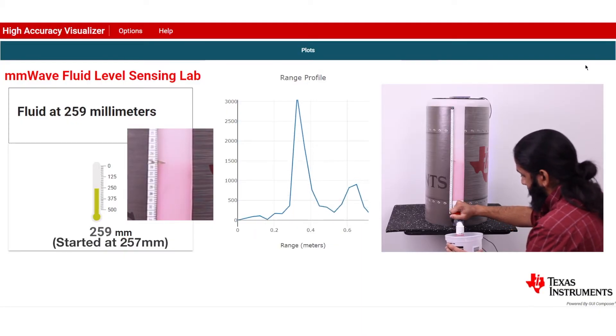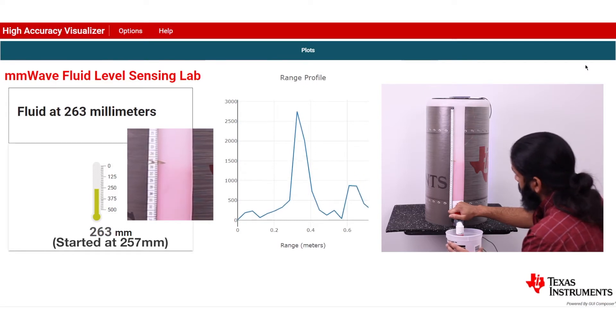We can change the fluid level in a tank by draining the water. This translates to only a few millimeters of fluid level and the millimeter wave sensor can pick up this change in displacement.